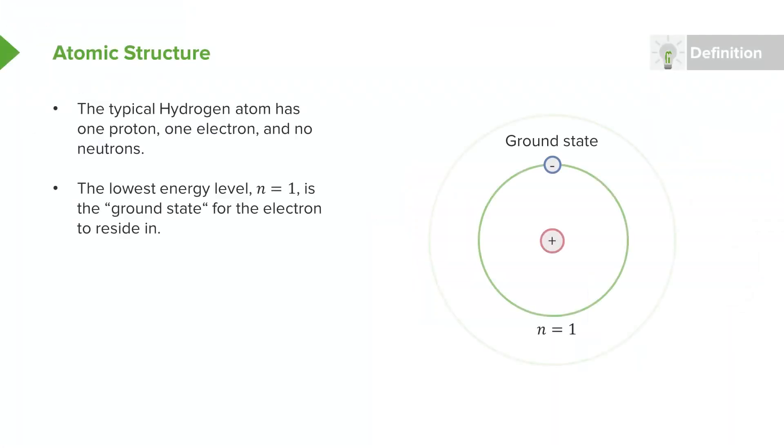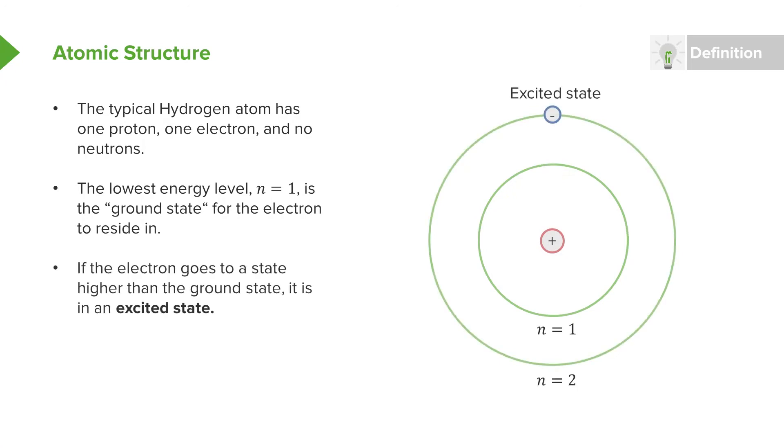And again, the lowest energy level, the n equals one level, is called the ground state for the electron to be in. So this phrase, the ground state, comes up over and over again. So certainly be familiar with the fact that if I say ground state, I'm referring to the n equals one energy level.